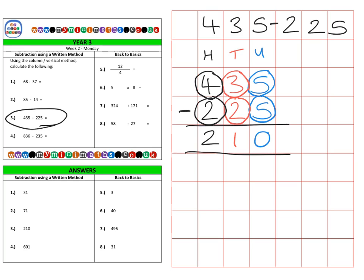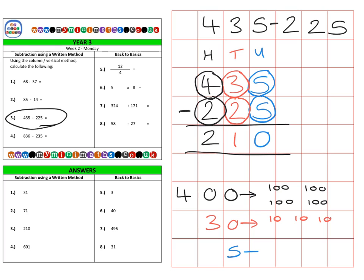We can look at these as individual place values — the hundreds, the tens, and the units. For 435, we have four hundreds, three tens, and five ones. We need to take away 225, so starting with the units, we take away five — one, two, three, four, five.